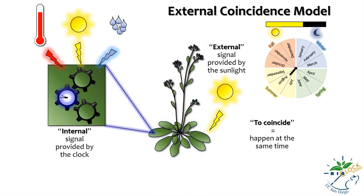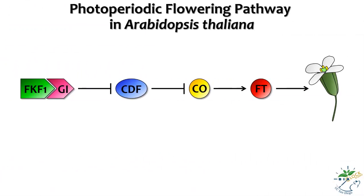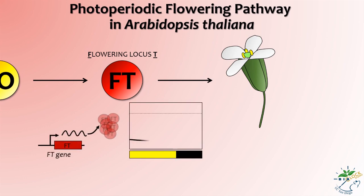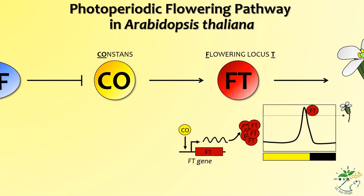For flowering to occur, both signals need to coincide. For Arabidopsis, this can only happen during the summer when the daytime is longer than nighttime. Now let's dig into the molecular aspects of photoperiodic flowering in Arabidopsis. Flowering Locus T, or FT, is the key signal protein required for flowering. When FT molecules accumulate up to a certain threshold, they trigger flowering.